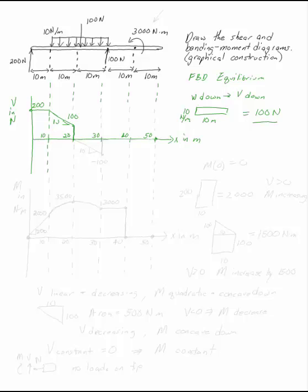And again, I have the same distributed load between 20 and 30. So I have the same decrease in my V diagram to another 100 newton decrease. That brings me down to minus 100. The slope is still 10 or negative 10. Now I have the 100 newton load up. 100 newton load takes me back to 0 at x equals 30 meters.